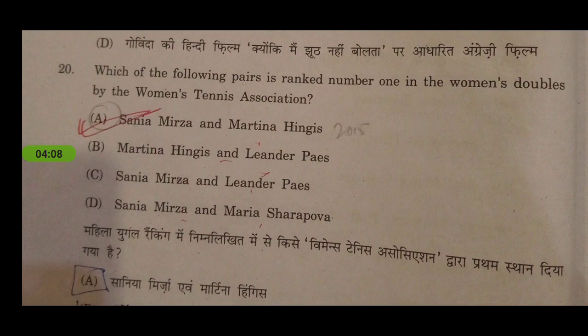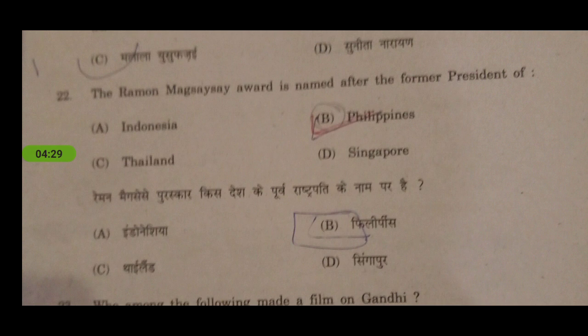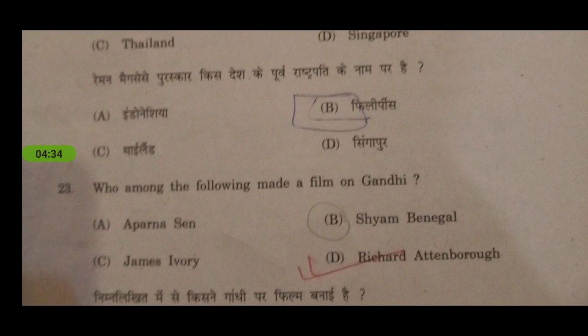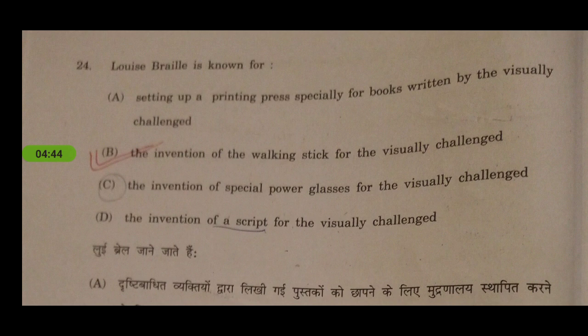Next: who among the following is a famous activist in the field of education? Arundhati Roy is a writer, Medha Patkar is a social activist, Sunita Narain is an environmentalist, and Malala Yousafzai is an activist in the field of education. The Ramon Magsaysay Award is named after the former president of the Philippines. Next: who among the following made a film on Gandhi? The answer is Richard Attenborough.